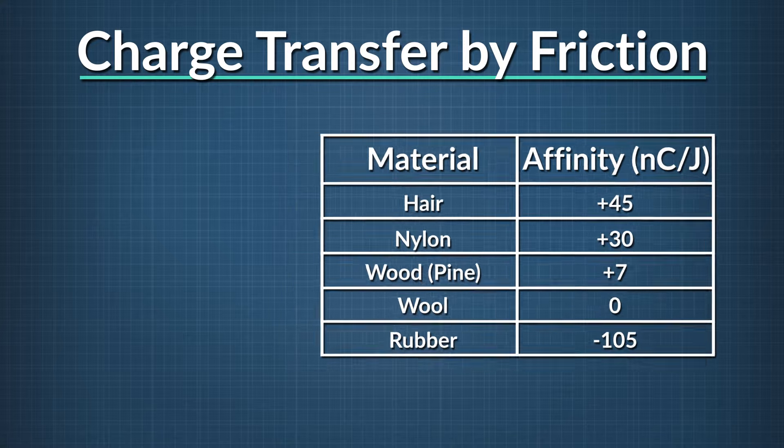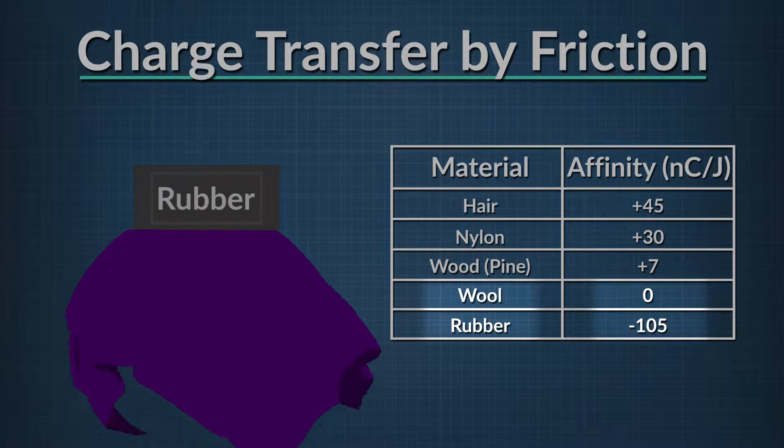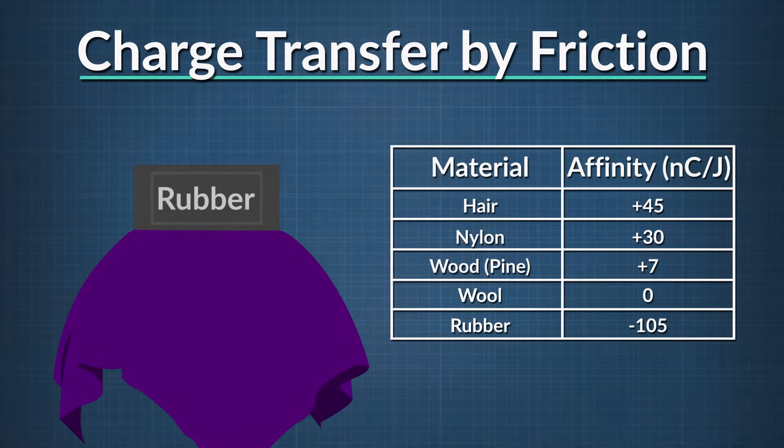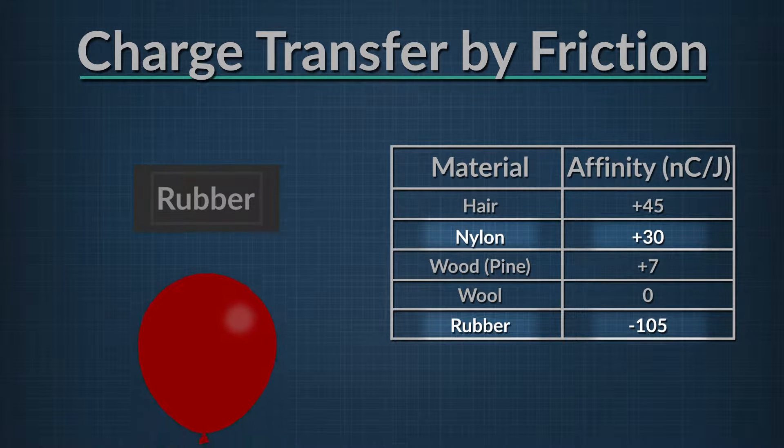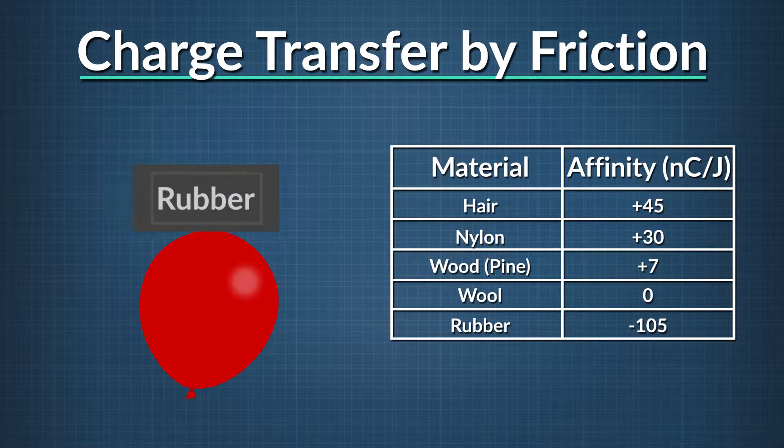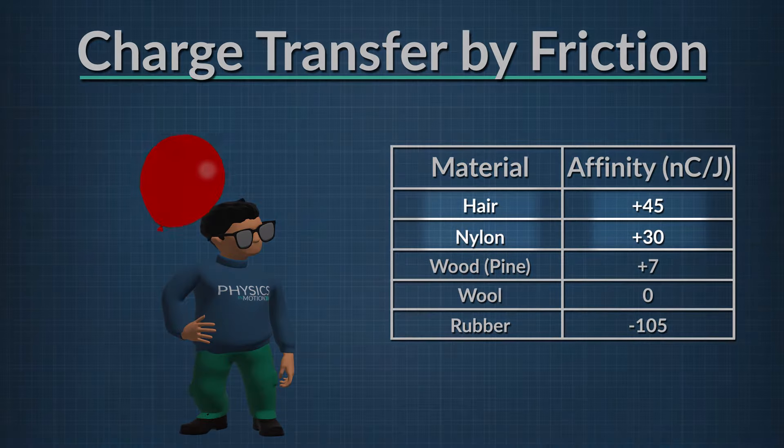Think about these three tribo or rubbing events. In the first example, we take neutral pieces of wool and rubber and rub them together. In the second example, we rub neutral rubber on a nylon balloon. Finally, we rub a neutral nylon balloon on our hair.